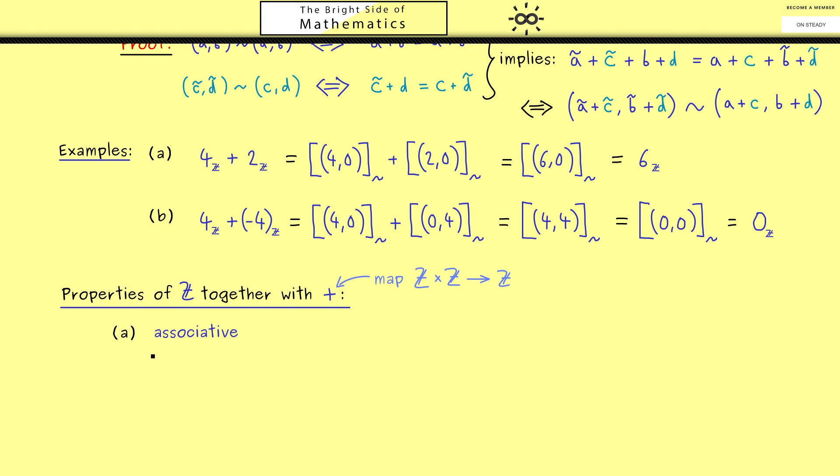First of all, it's also associative, so we can set parentheses as we want. Then you might guess the second property we have is the commutative law, so we can also change the order as we want. And finally, the third property is also known from the natural numbers. We have a neutral element, so adding zero does not change anything, no matter which integer m we choose here.